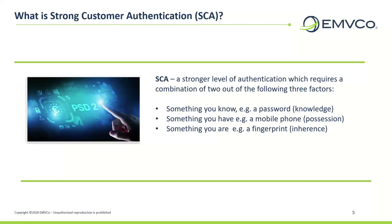SCA is a stronger level of authentication, which requires a combination of two out of the following three factors: something you know, for example a password; something you have, for example a mobile phone that is in your possession; and something you are, for example a fingerprint for biometric inheritance.